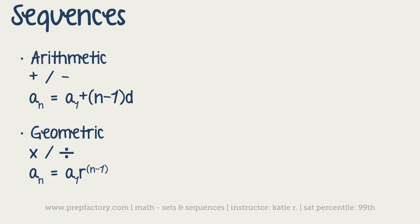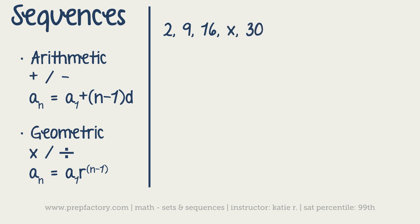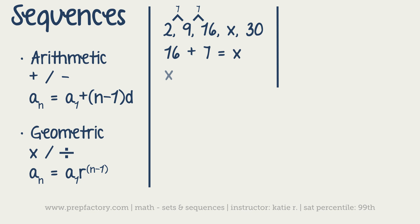Let's use those formulas on some problems. Here's a sequence: 2, 9, 16, x, 30. To check if it's arithmetic: 2 + 7 = 9, + 7 = 16 — yes, it's arithmetic with a difference of 7. In this case, it's easier not to use the formula. Just say 16 + 7 = x, or 30 − 7 = x, and either way x equals 23.